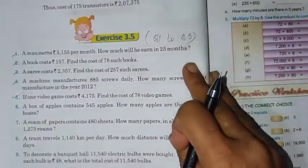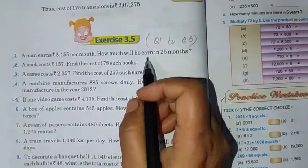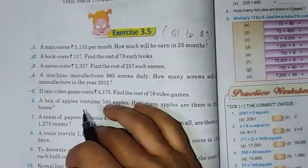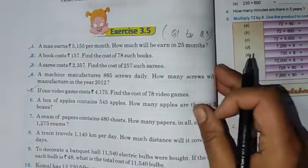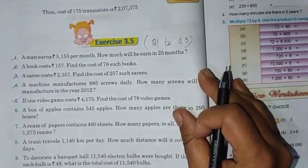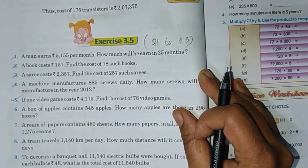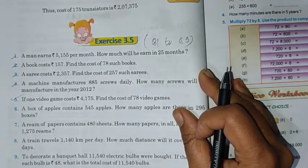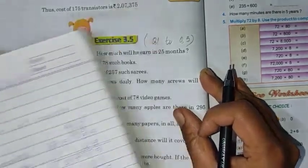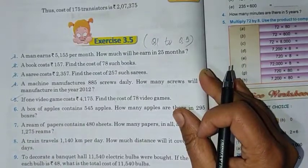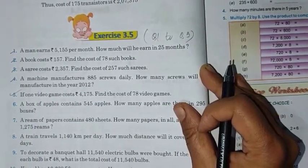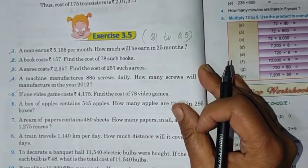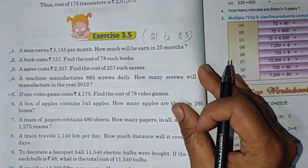So, very important for you to understand first what is the question. When we multiply, when the value of 1 is given and more is asked, value of 1 is given and more asked, that time we multiply. Suppose you are given the cost of 1 ice cream 10 rupees. What is the cost of 3 ice creams? Then 10 threes are 30 rupees. So here we do multiplication.